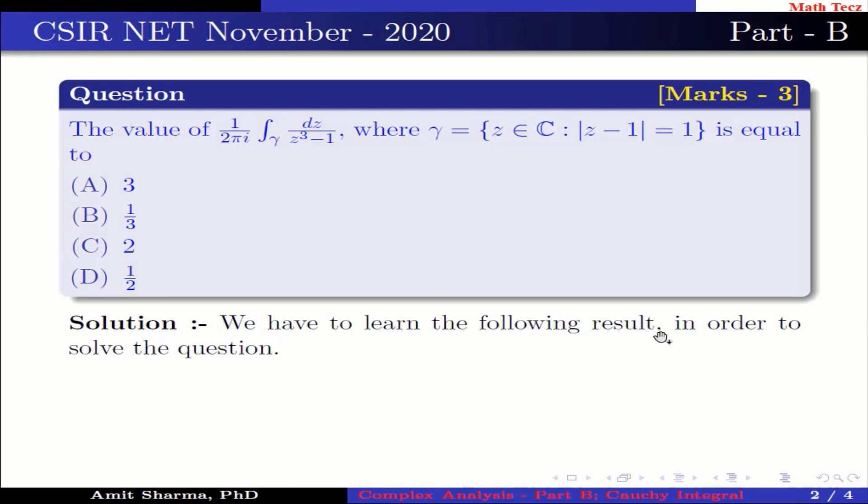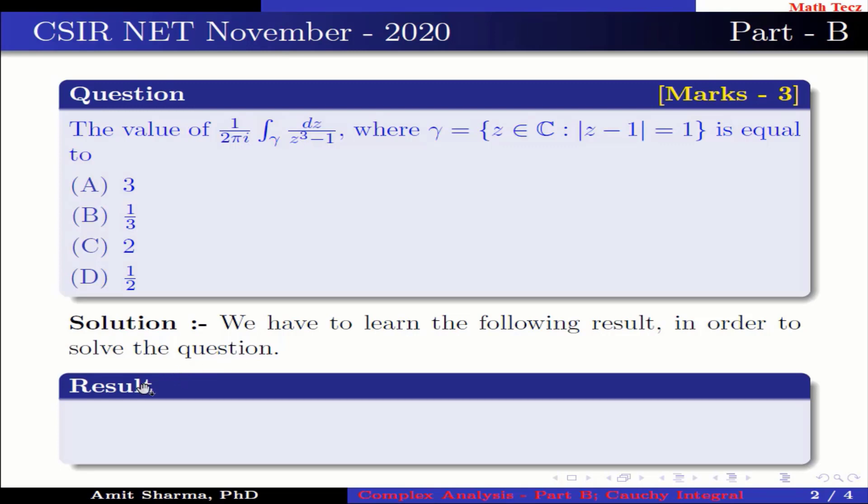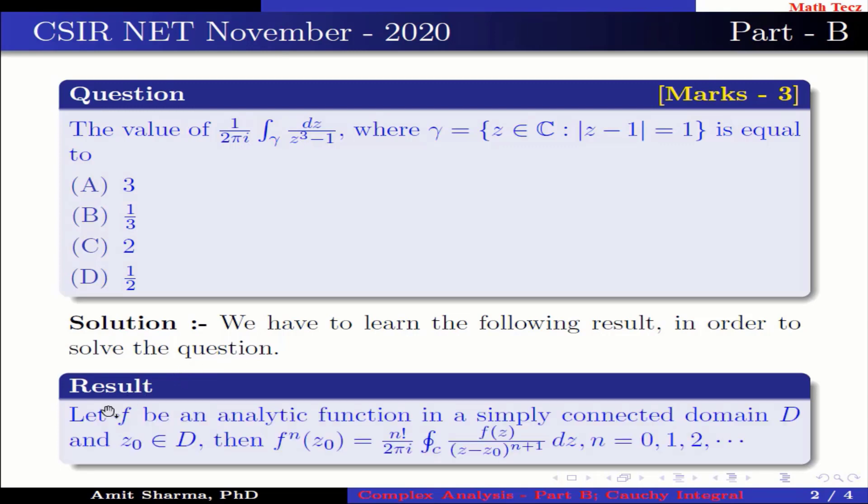Result: Let f be an analytic function in a simply connected domain D, and z naught belongs to D. Then f of z naught equal to n factorial by 2 pi i, integration over C...